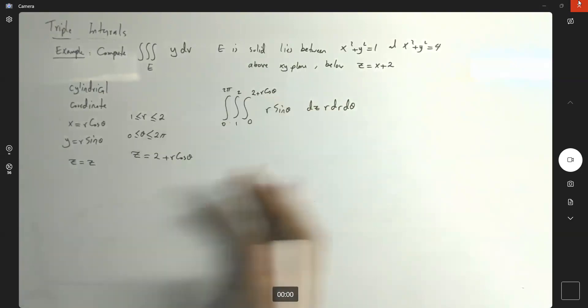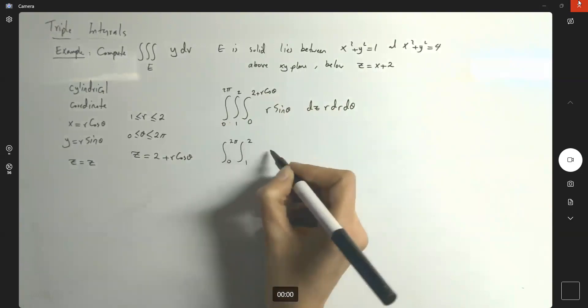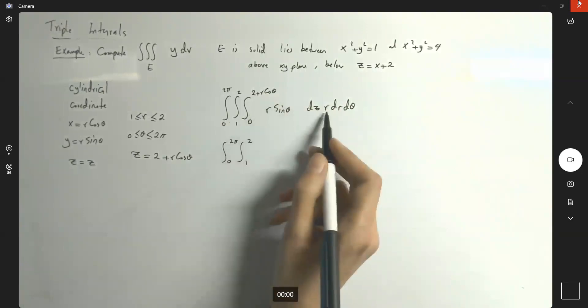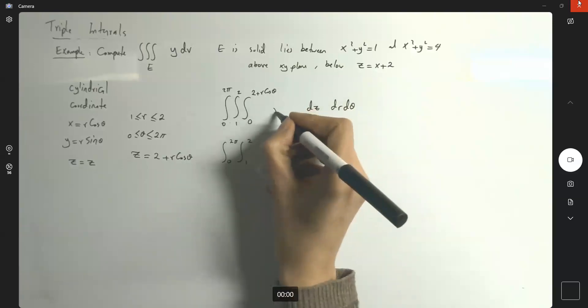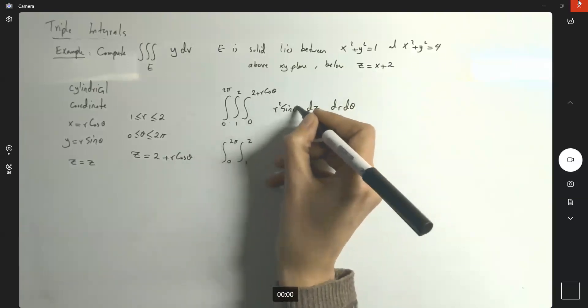Very good. So we have everything. We just need to do the computation. This is the integral 0 to 2 pi, 1 to 2. And here we have r times r, which gives me r squared.